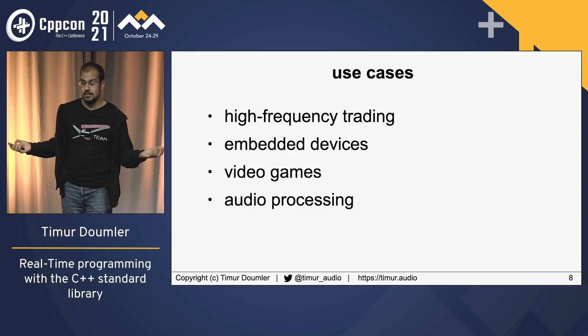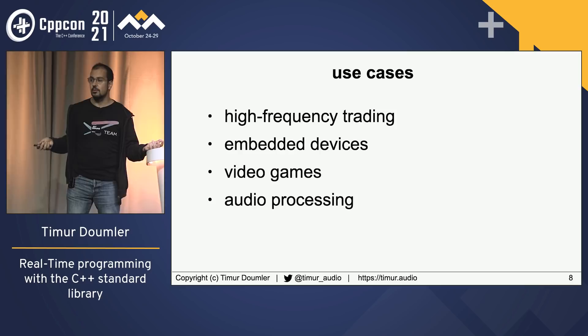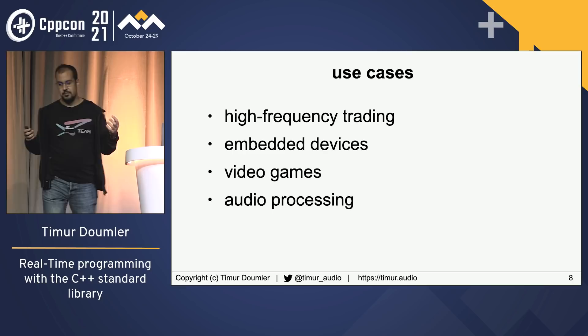What are areas where you encounter constraints like this? Stuff like high-frequency trading, embedded devices — making cars or robots — video games, and audio processing, which is one of the things I'm doing. I just want to have a few slides to talk about that use case.